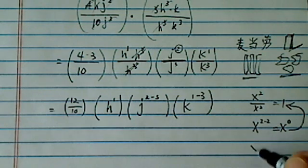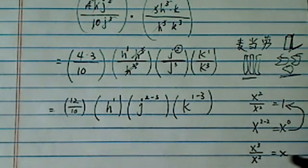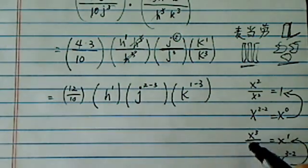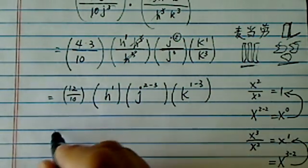If you still aren't convinced, X cubed over X squared, you know the answer is X to the one. How are you going to get one? You're going to subtract. X³ minus 2, that gives you X to the one. So when you have a division, you subtract the exponents.